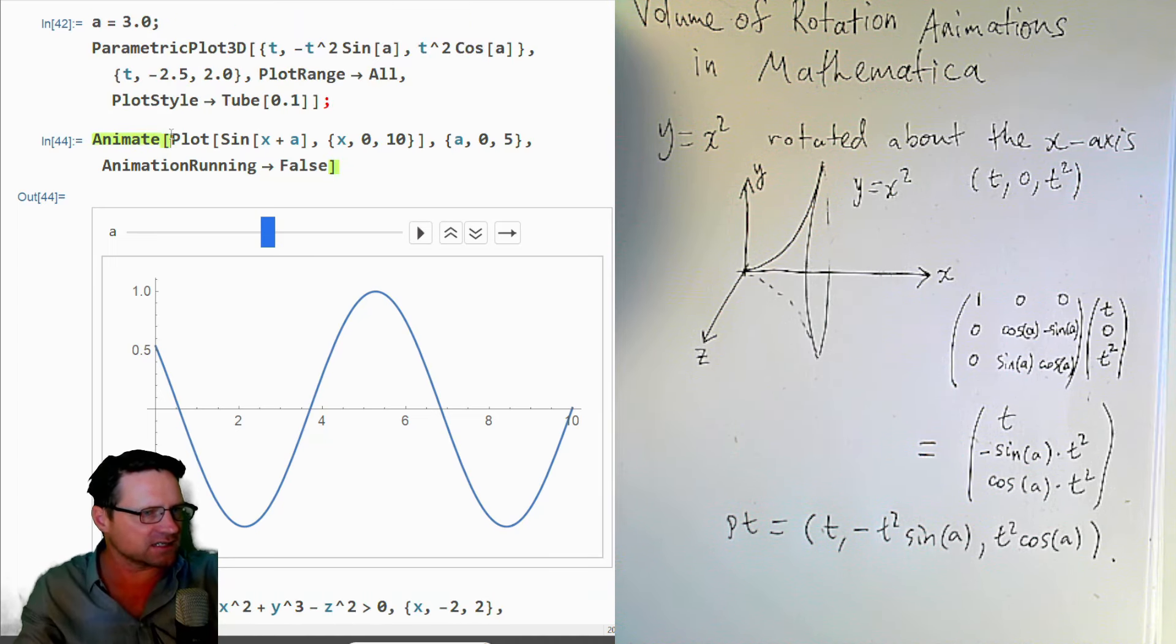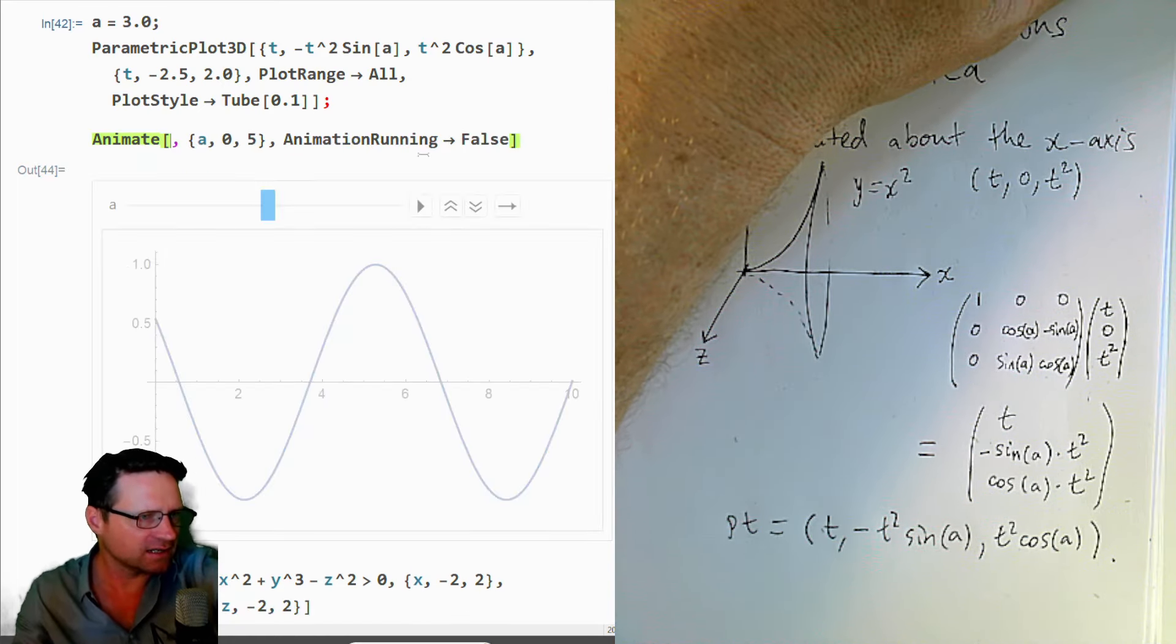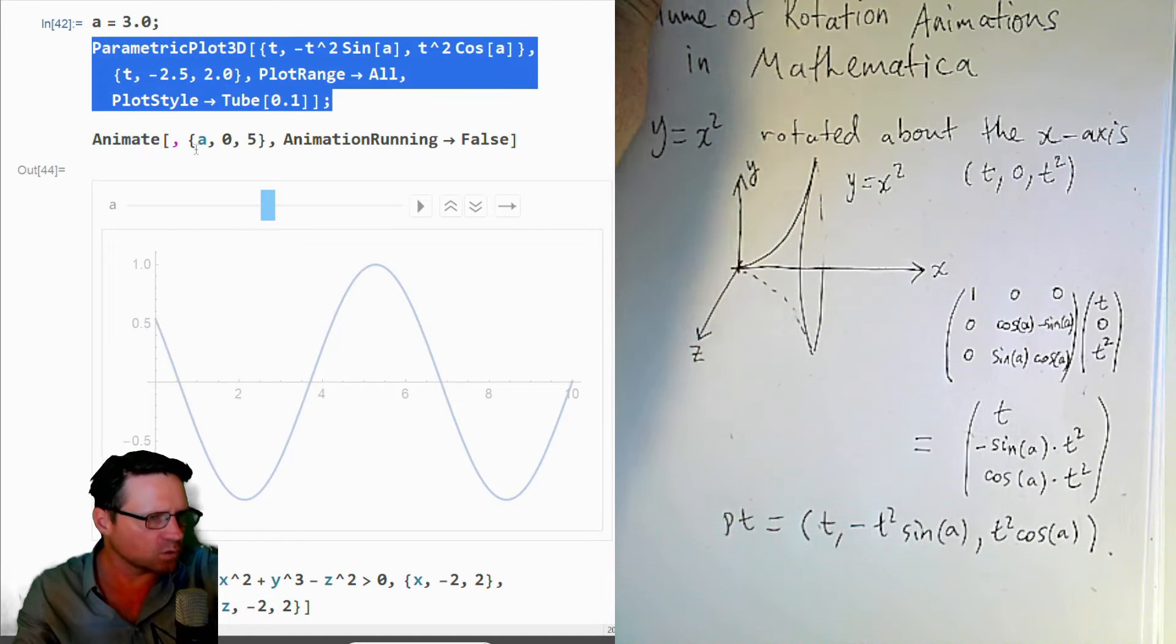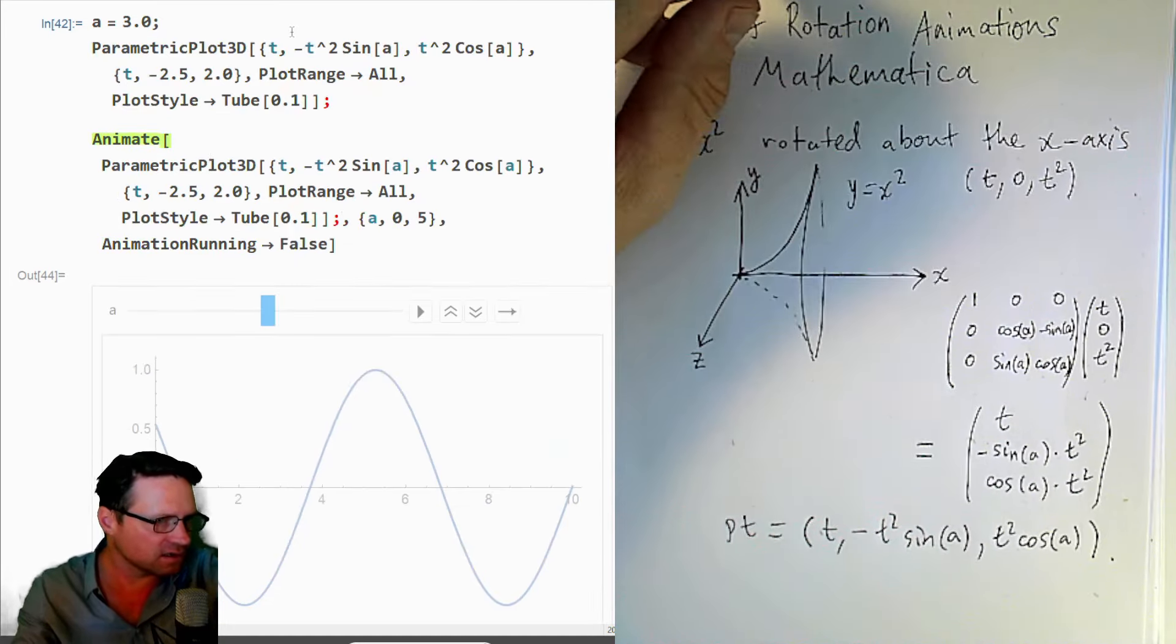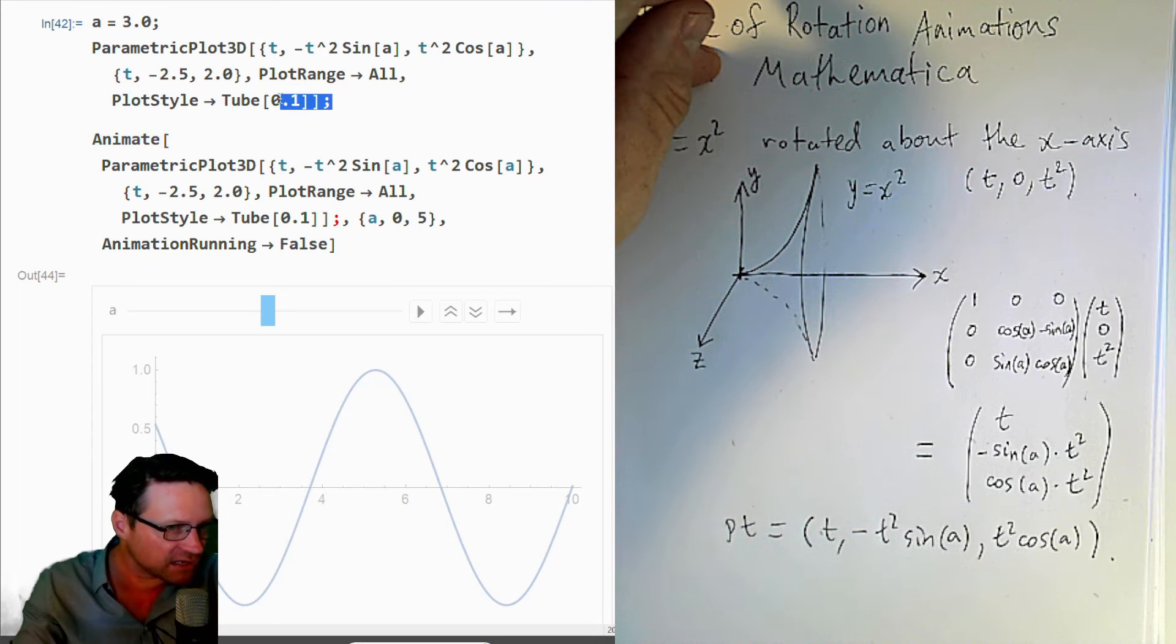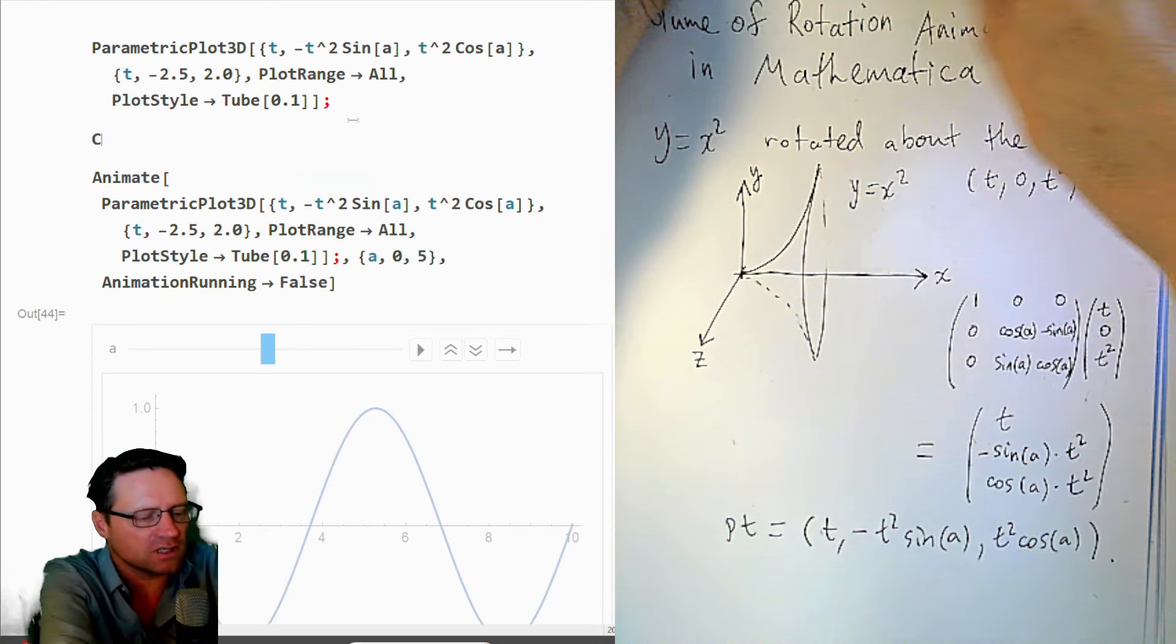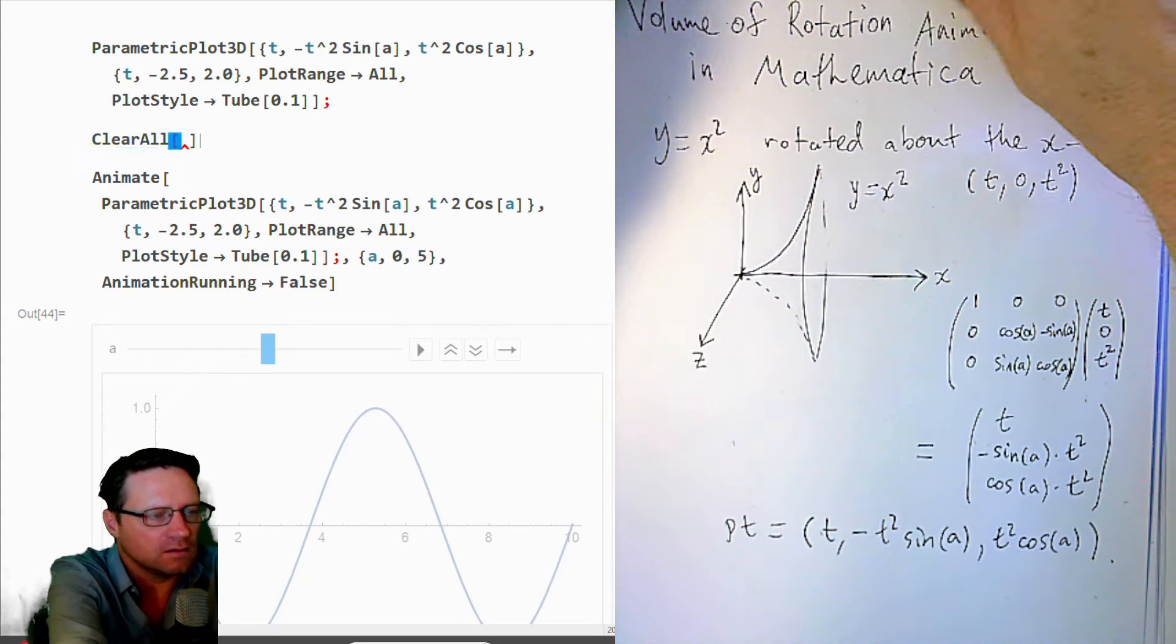So what we want to do is animate this parametric plot that we have. So let's take out this plot part. And I will replace it with this. And then above that, let's clear the value of A. So clear A.